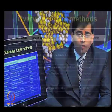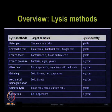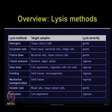Now I will give you an overview of lysis methods. Detergents can be used for tissue cultured cells — this is a gentle lysis method. Enzymatic lysis can be used for plant tissues, bacterial cells, fungal cells, etc. — this is again a gentle lysis method.